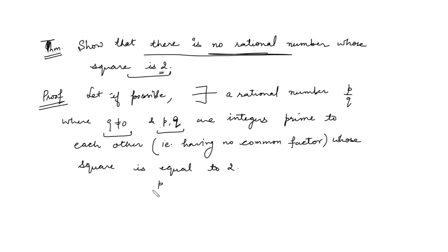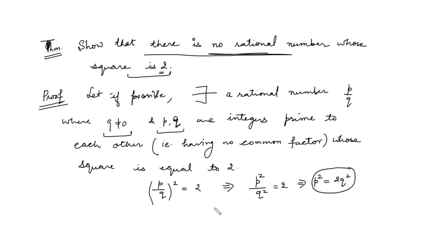That means what is given to us? P by Q, whole square, is equal to 2. This is what we have supposed. So what will we get? We get P square upon Q square is equal to 2. Now since Q is non-zero, we can move it to this side using the properties of algebra, and we get P square is equal to 2 times Q square.